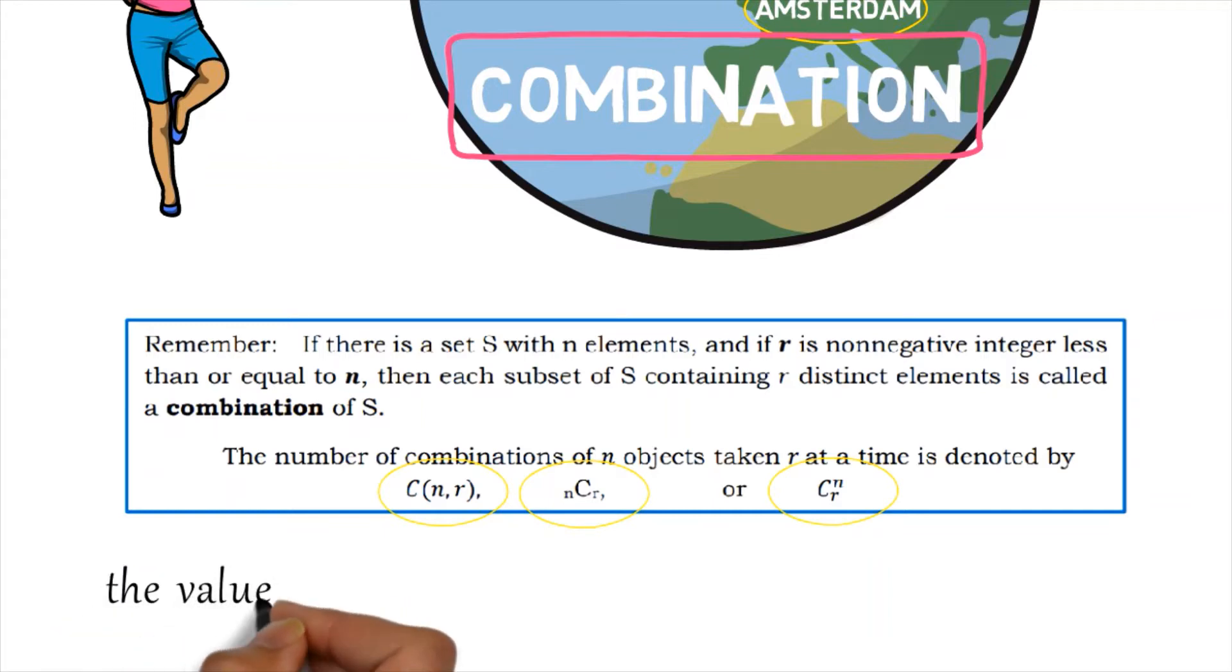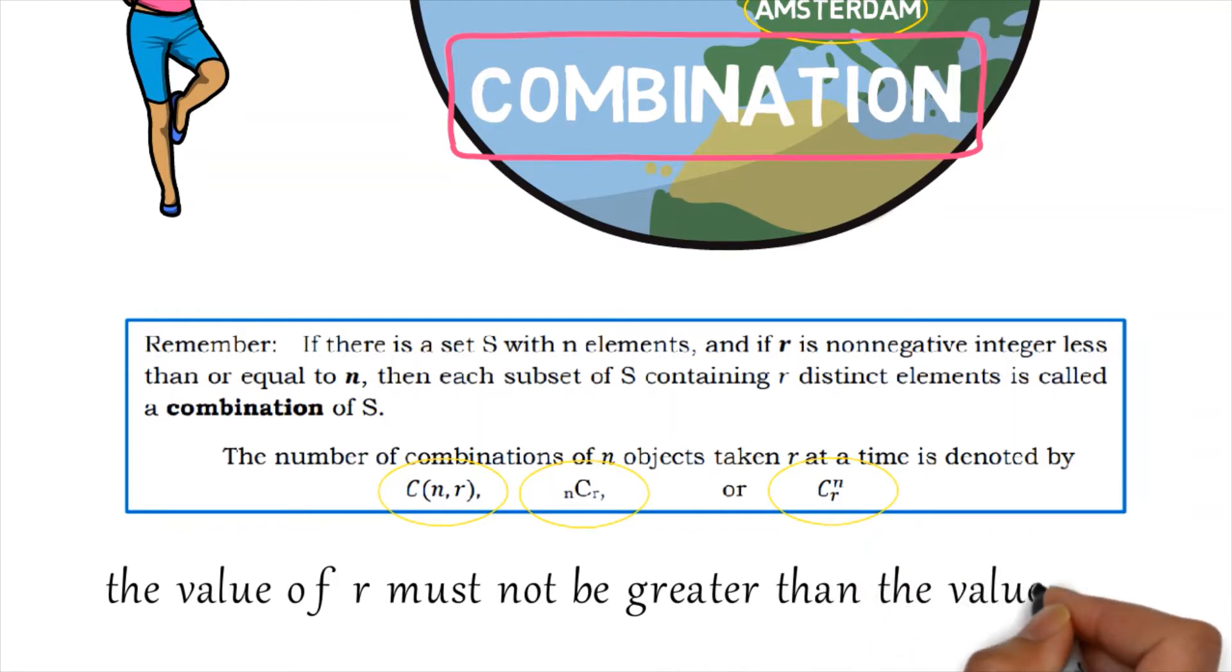In this case, the value of R must not be greater than the value of N, where N is the number of objects to choose from, and R is the number of objects chosen.